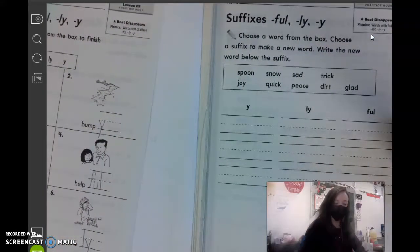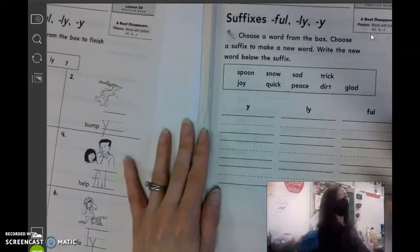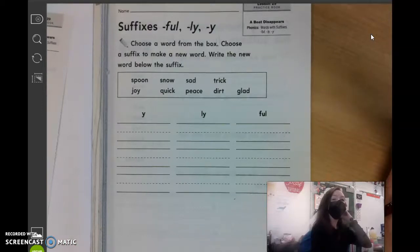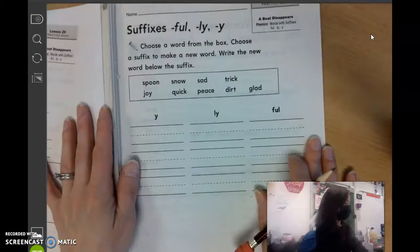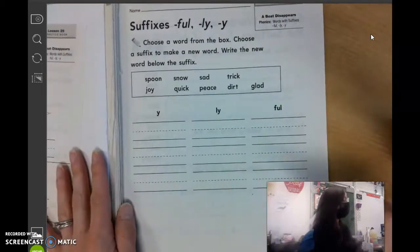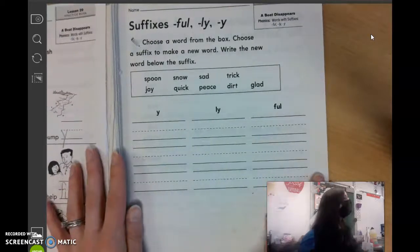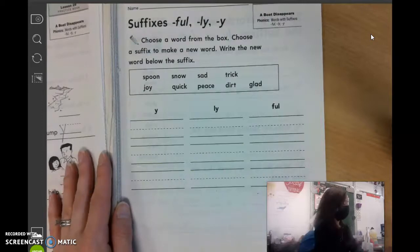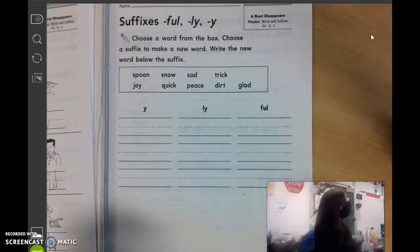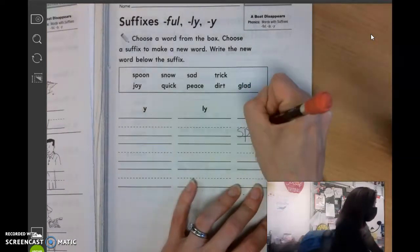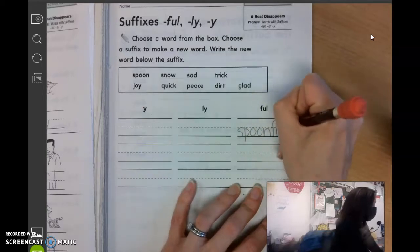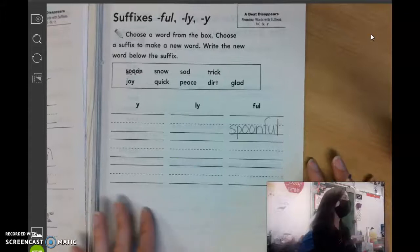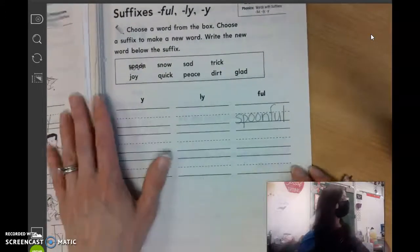And then we are going to look at page 183. It says choose a word from the box and choose a suffix to make a new word. Write the new word below the suffix. So if we picked the word spoon, where would we write spoon? Under Y, L-Y, or F-U-L? Claire? Right. Makes the word spoonful. So you're going to write S-P-O-O-N-F-U-L. Spoonful. I need a spoonful of cereal or a spoonful of sugar. Very good.